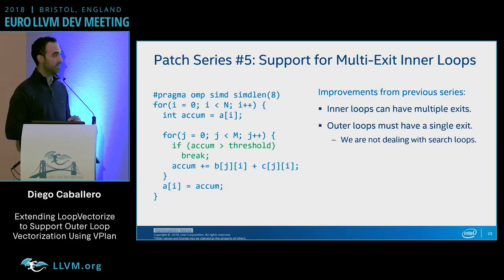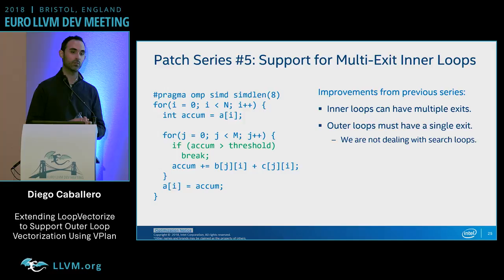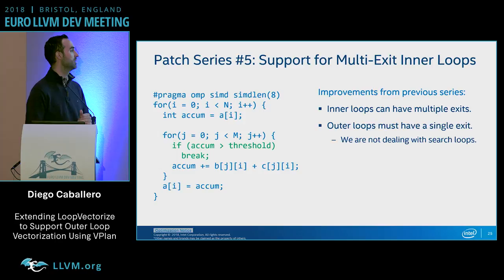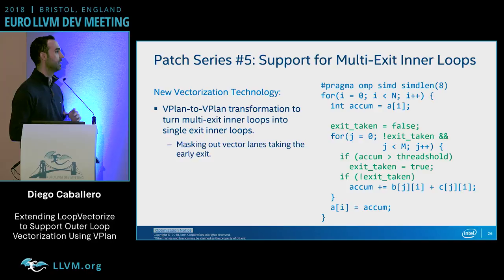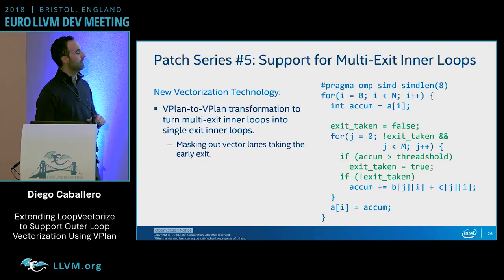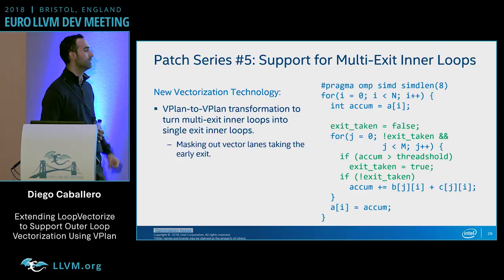Patch series five introduces support for outer loops with multi-exit inner loops, such as a loop with a break statement. The multiple exits must be in the inner loops, not the outer loop being vectorized — exits in the outer loop constitute search loop vectorization, a completely different and more complicated problem. We introduce a vPlan-to-vPlan transformation converting multi-exit inner loops to single-exit loops, replacing the early exit with a flag tracking which iterations take the exit and masking out those lanes.